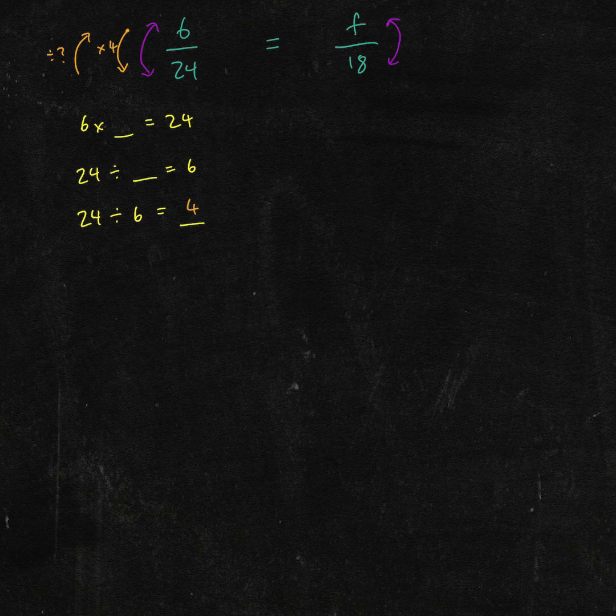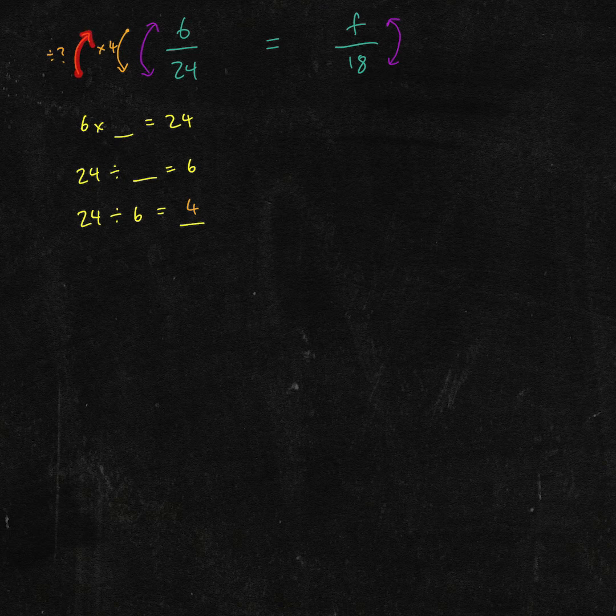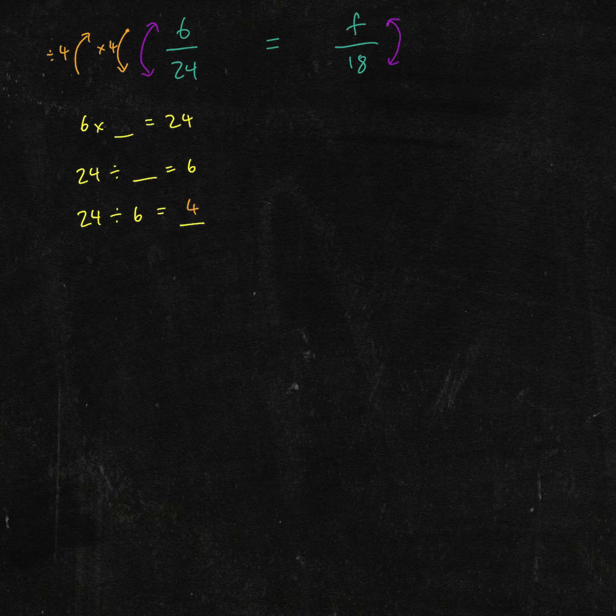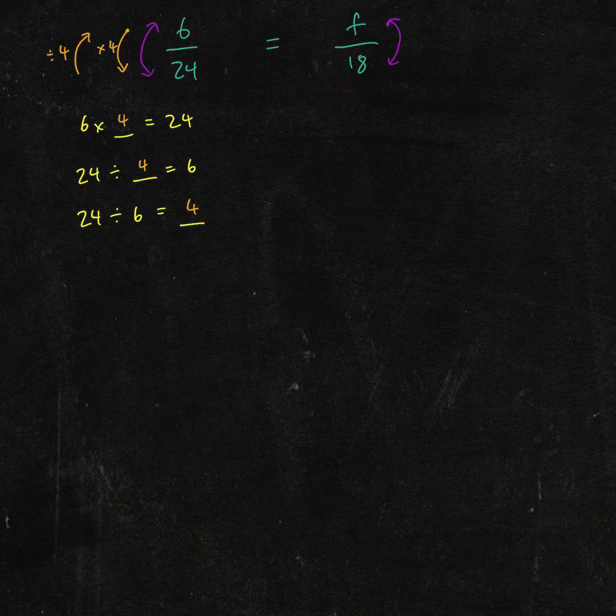Which means inversely, to get from 24 to 6, we need to divide by 4. Alright, so we can put 4 in all of these blanks and they will all equal out. So in ratios, like all equations, if we do something to one side, we need to do it to the other side as well.